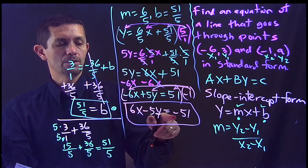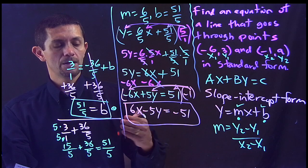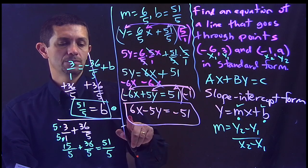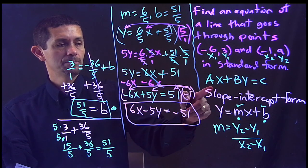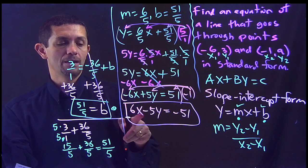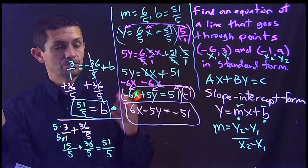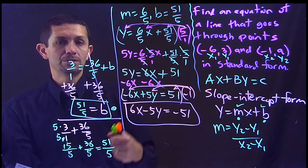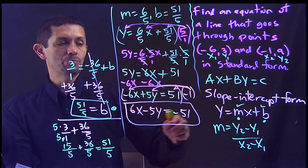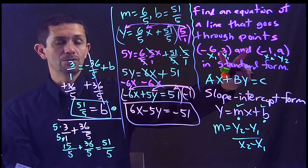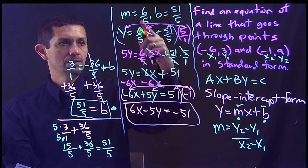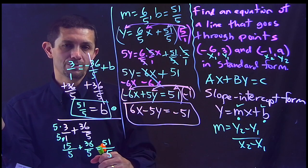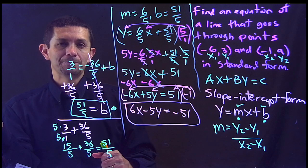And now this is your standard form: 6x minus 5y equals negative 51. x and y are on one side, the constant is on the other side, all values are integers, and A is positive. That's the solution. We wrote the standard form of an equation starting from two points, going through slope-intercept form — a long process, but you practiced slope-intercept form and learned how to eliminate denominators. I hope that was helpful. Thank you.